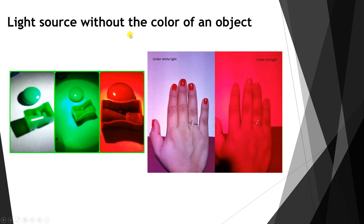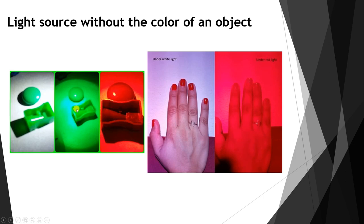For example, consider a light source that does not have the color of an object. We have two green objects. If white light falls on them, we will see the green color because the white source contains green. If a green source falls on the object, we will also see it as green since the source has the same color as the object. In these first two cases, we see the object with its real colors.